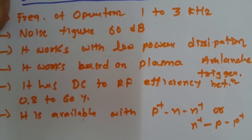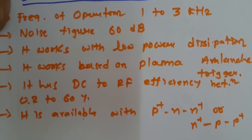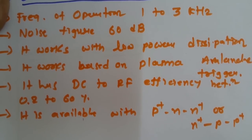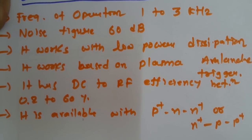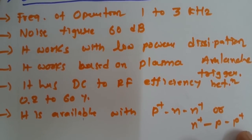In TRAPATT diode, avalanche multiplication is used where we give a current pulse to it. Based on that current pulse, it gets triggered with storage of plasma inside. When we give the current pulse, there will be a trapping of plasma, and avalanche multiplication results in extreme charge carrier generation. Then we release the plasma — we will observe this in the principle of operation discussion.